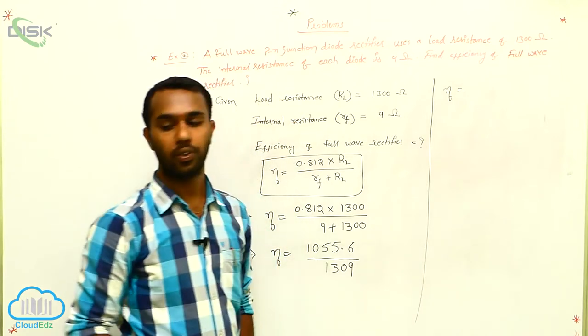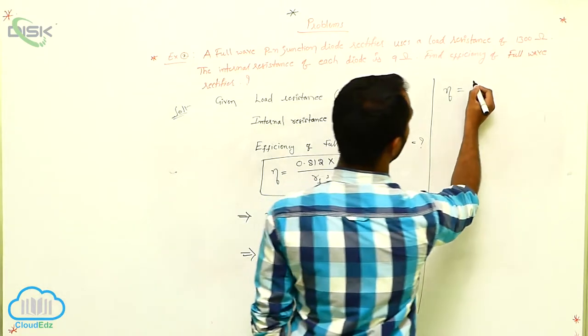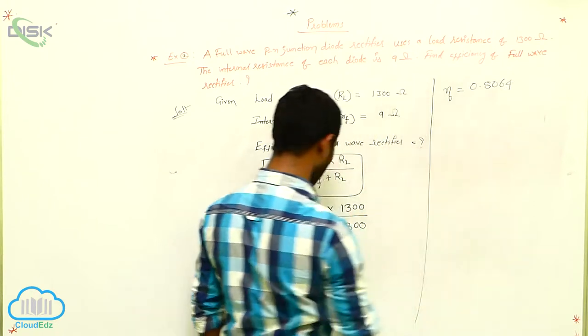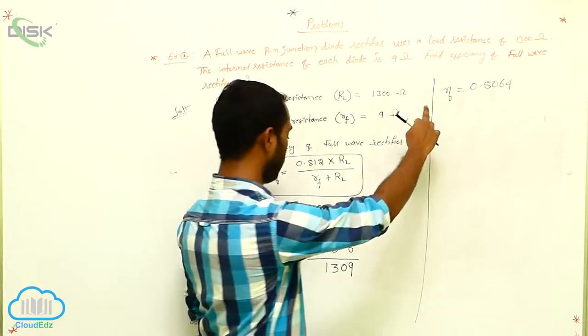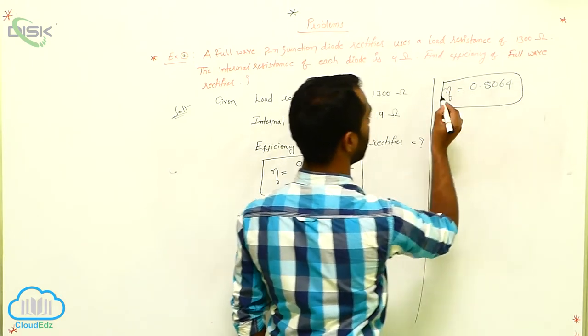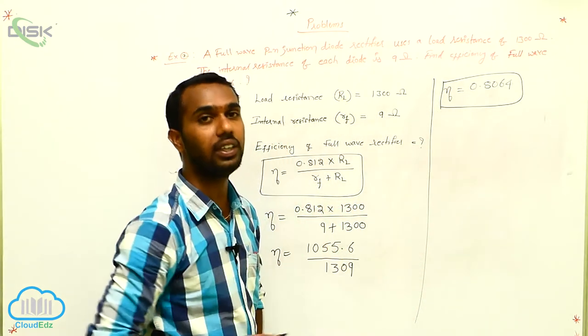That is our answer. That answer is, eta is equals to 0.8064. You cut this one, you get that. 0.8064. This is the efficiency.